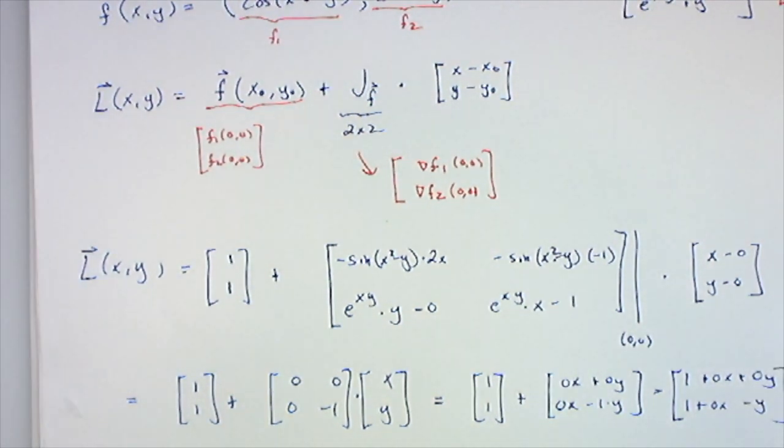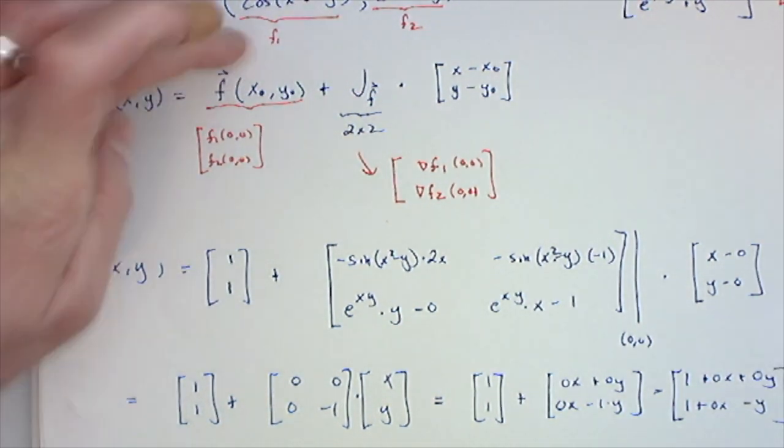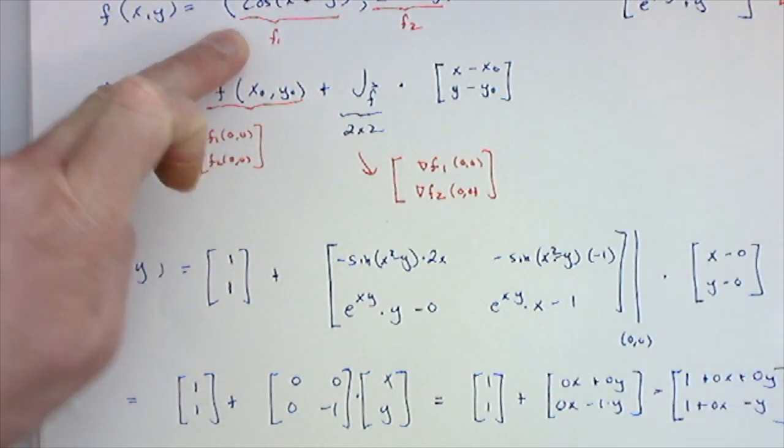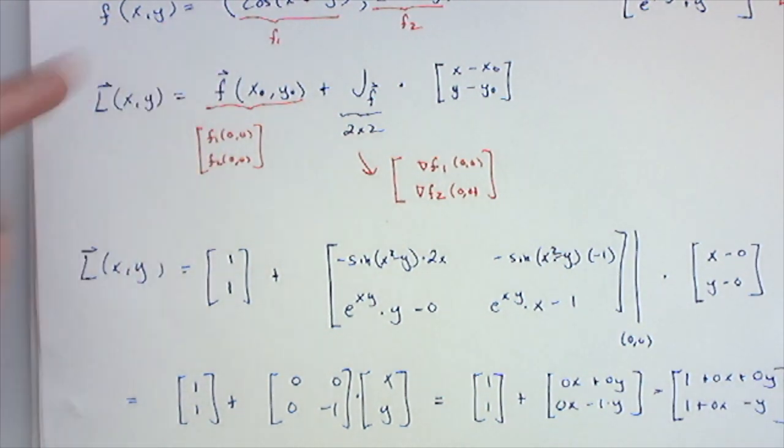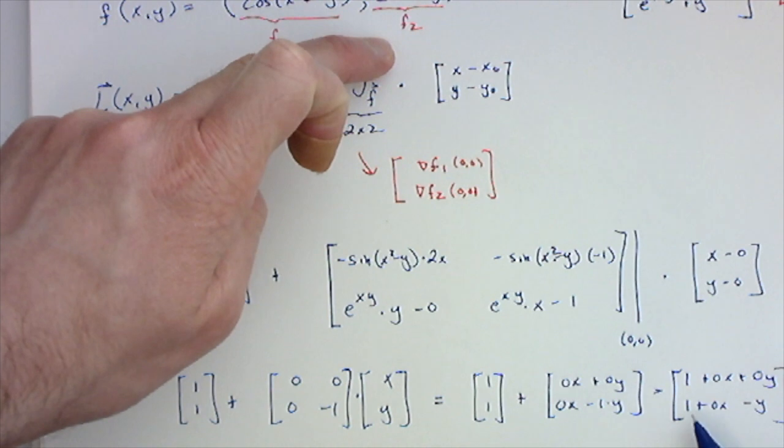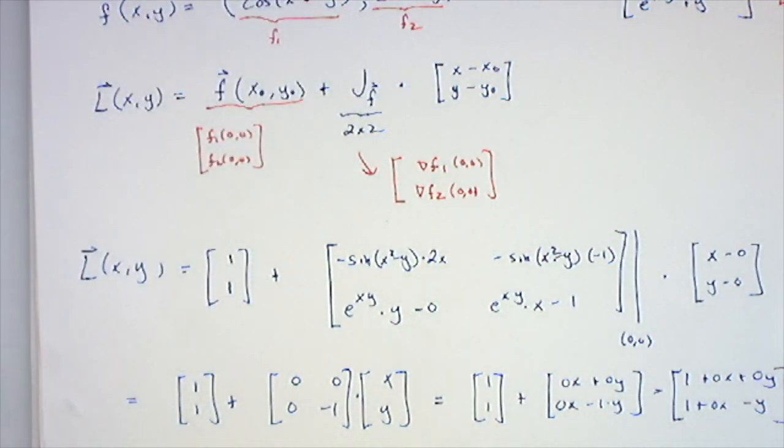So not very interesting. The linearization of the first part of the vector-valued function is just 1, the linearization of the second part of the vector-valued function is 1 - y. So that's how you do a problem like this. I hope that helps clarify things a little bit.